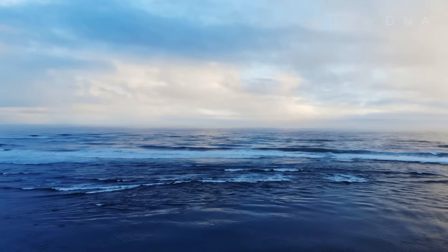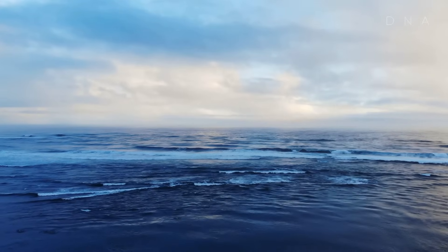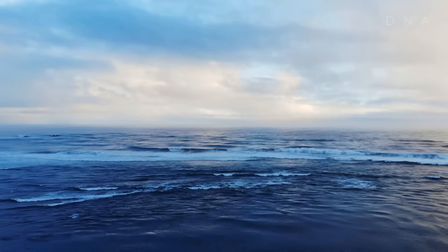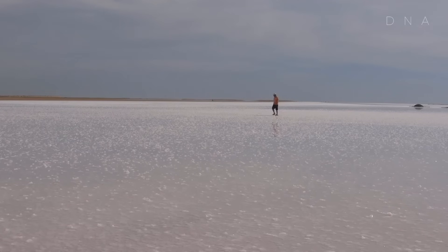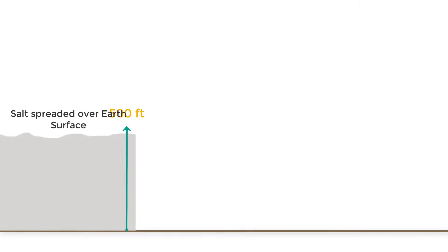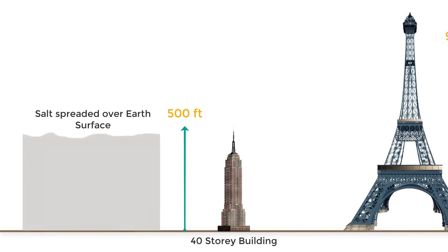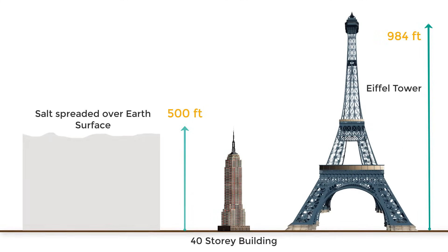By some estimates, if the salt in the ocean could be removed and spread evenly over the earth's land surface, it would form a layer more than 500 feet thick, which is above the height of a 40-storey office building.